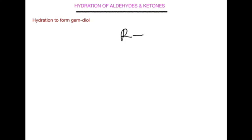A germinal diol means that at the end of our reaction we are going to have a carbon which has two hydroxyl groups attached to it. So we have our R groups bonded to a carbon, with an OH group here and another OH group here — if we have something like this then we call it a gem diol or germinal diol.